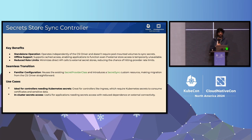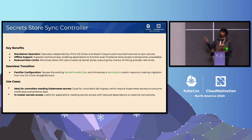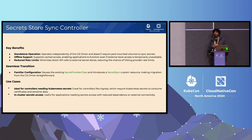In terms of offline support, once you get the secrets from the external secret store into your cluster, if there is a period of time where you have no connectivity to your external secret store, your workloads will still continue to work because the secrets are stored in Kubernetes Secrets and you can use them across your pods. And then reduced rate limits — in this case, you're not talking to the external secret store for every pod, but rather calling it once for one Kubernetes Secret, and then again for rotation.